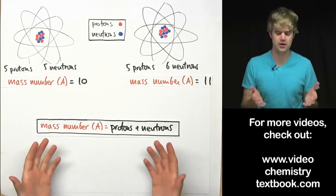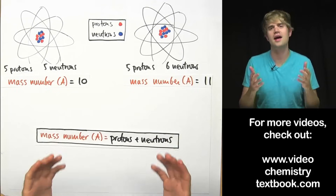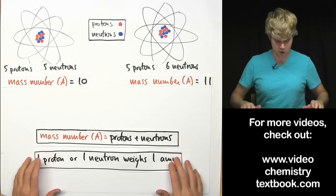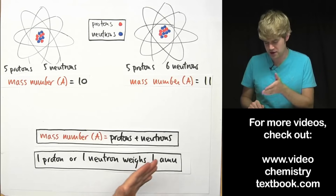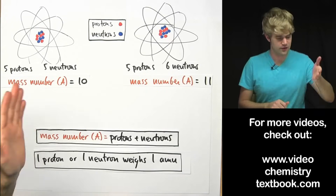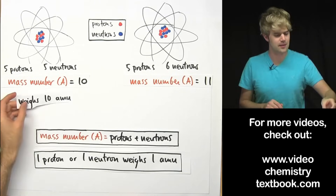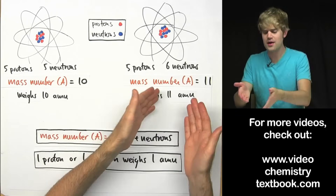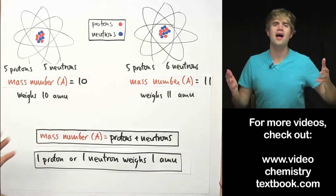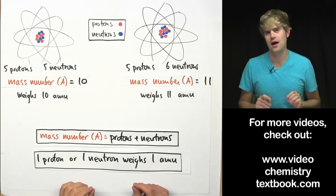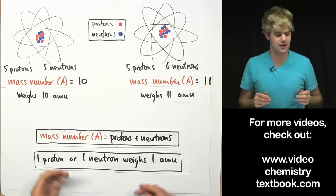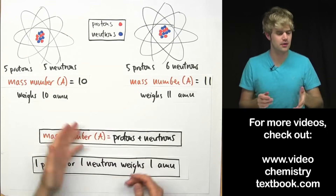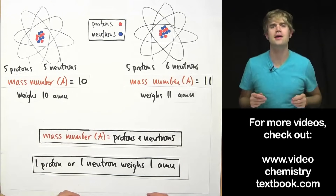Mass number tells us how many protons and neutrons are in the nucleus of an atom, but it's also important because it gives us an idea of how much the atom weighs. One proton or one neutron weighs about one AMU — one atomic mass unit. So if you have a mass number of ten, five protons and five neutrons, your atom weighs about ten AMU. A mass number of eleven means the atom weighs about eleven AMU. Electrons are so tiny that we don't worry about their mass. So that's mass number: protons plus neutrons, giving you the atom's weight in AMU.